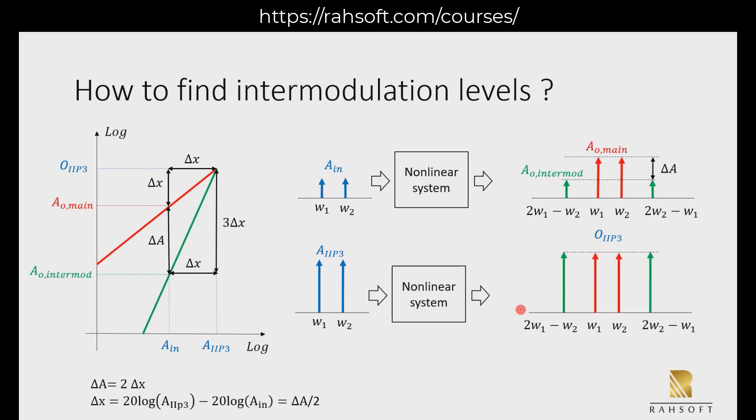Now we want to see how we can do some calculations here. For example, imagine that we have this A_in as the input signal, and we have the gain and IP3 of the system. We want to find the intermodulation component at the output. If we go to the left side, this graphical representation can help us find a very good expression and formula for this.